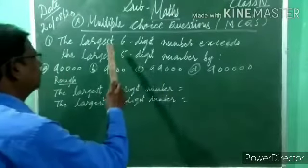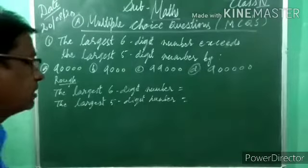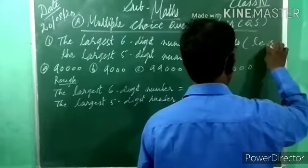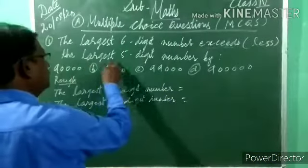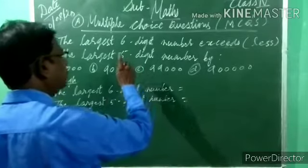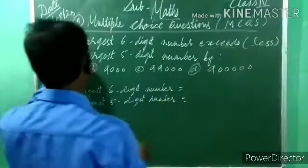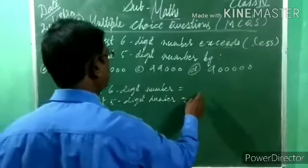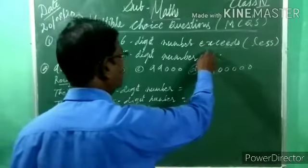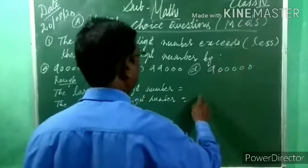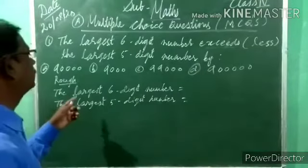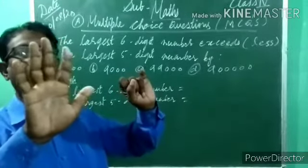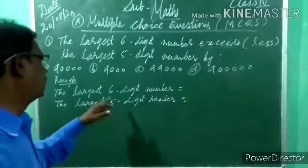We need to find the largest six-digit number. 'Exceed' means 'less' — so the largest six-digit number minus the largest five-digit number. The largest six-digit number has nine written six times: nine lakh ninety-nine thousand nine hundred ninety-nine (9,99,999).